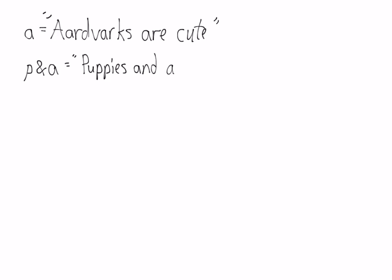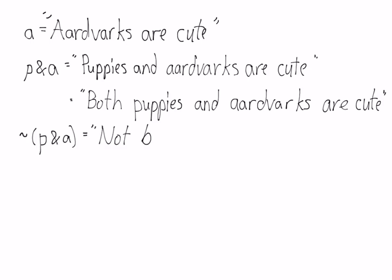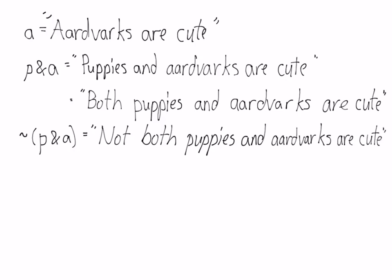If you have an additional variable A, which stands for 'aardvarks are cute,' then you can combine them with a conjunction. P and A stands for 'puppies and aardvarks are cute' — another way to say this is 'both puppies and aardvarks are cute.' Then, if you negate this, you get the statement 'NOT both puppies and aardvarks are cute.' You just add NOT to the beginning.